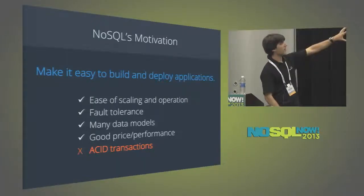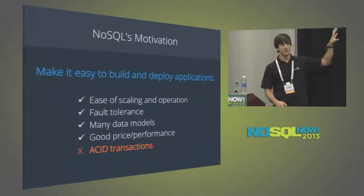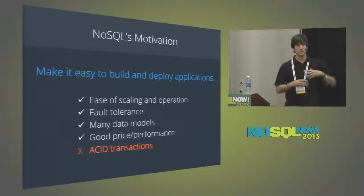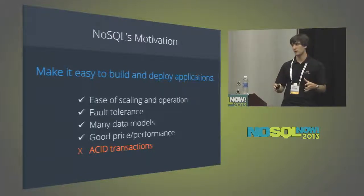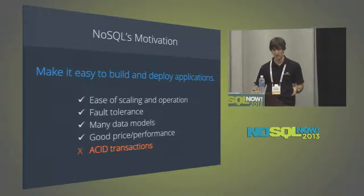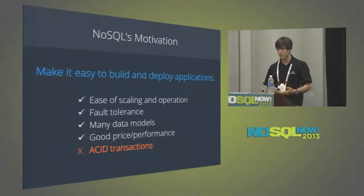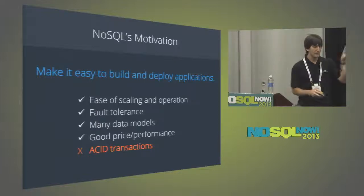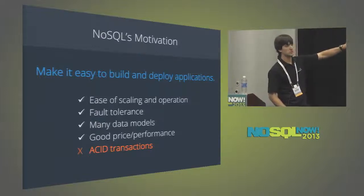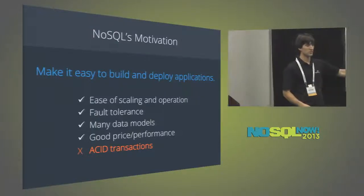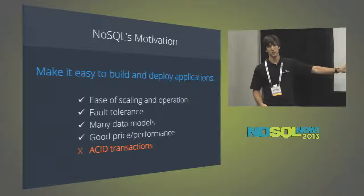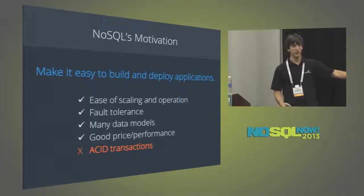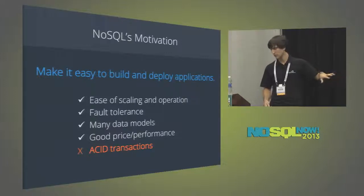To understand how I think about ACID, I want to get back to the motivations behind NoSQL, and I think of it simply as making it easy to build and deploy applications. You want some storage engine, some back end for your application that just makes it easy to build, easy to deploy, easy to scale. Fault tolerance, a diversity of data models to choose from, good price performance. The first generation NoSQL systems really hit a lot of these check marks. But to me, ACID transactions are one of the key things that makes it easy to build and deploy an application — to reason about it and have it run well. And the first generation of NoSQL really didn't hit that.